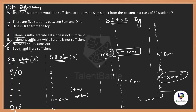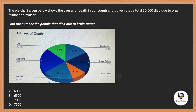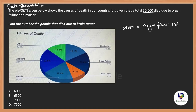The next question is from data interpretation, where we again have five questions from this concept. The pie chart shows the causes of death in our country. It is given that a total of 30,000 people died due to organ failure and malaria combined. We need to find the number of people that died due to brain tumor. Organ failure is 19.4% and malaria is also 19.4%, so let the total deaths be X.